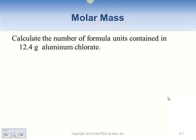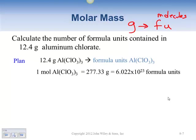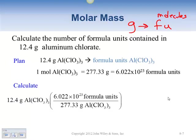Now we're going to calculate the formula units contained in 12.4 grams. Our plan is to go from grams to formula units or molecules. We know that 1 mole is 277.33 grams and equals 6.02 times 10 to the 23rd formula units. So 12.4 grams gets multiplied by 6.02 times 10 to the 23rd, then divided by 277.33 to give 2.69 times 10 to the 22nd formula units.